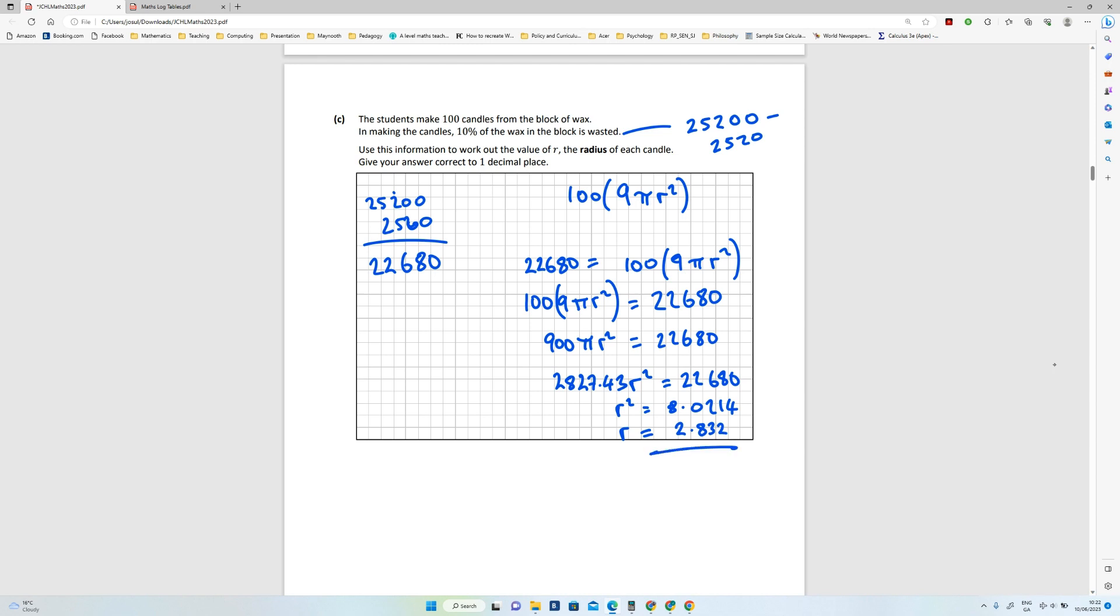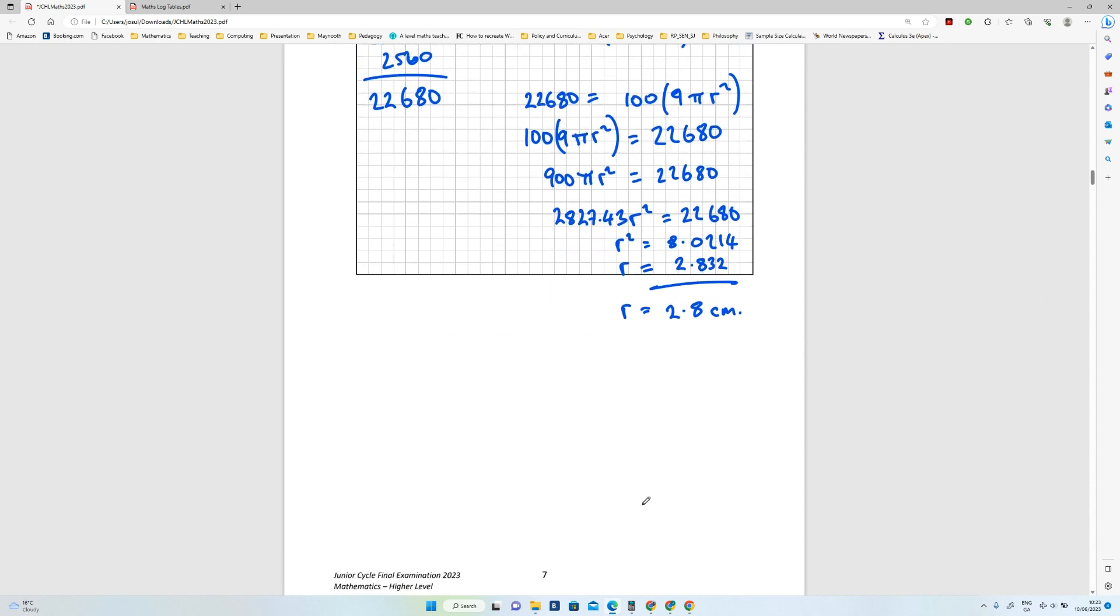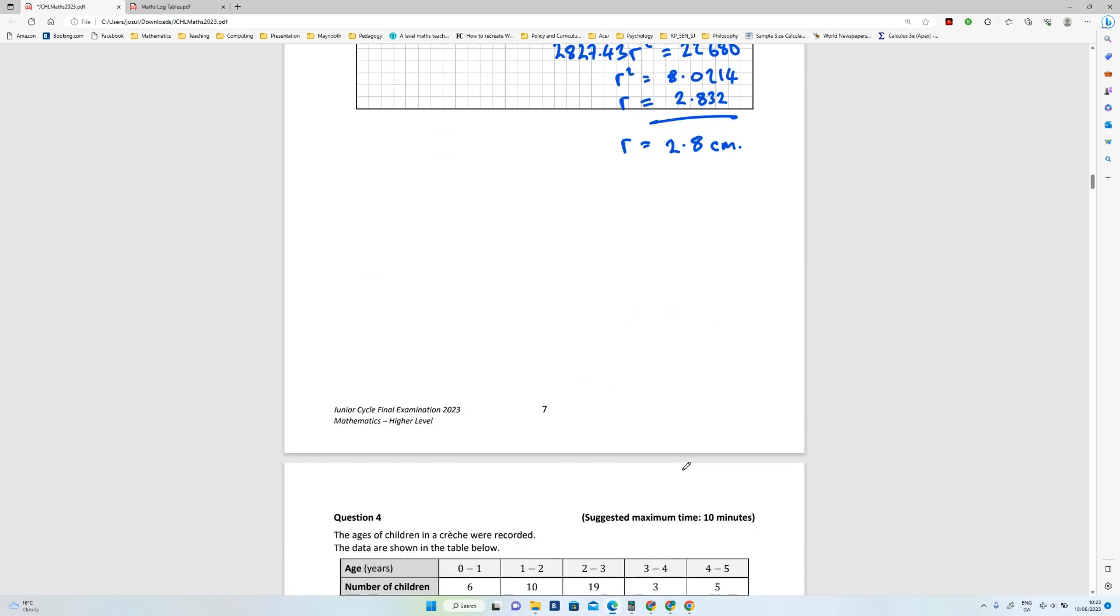And that's my answer for r. To one decimal place, so r equals 2.8, and that should be centimeters. Okay, so that's my answer for that part, and that's it for question 3.